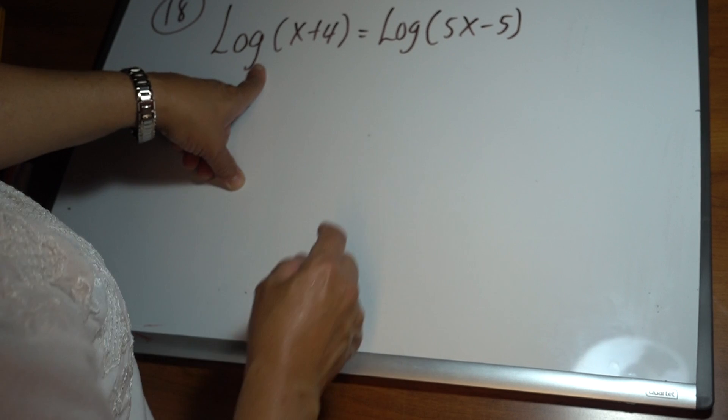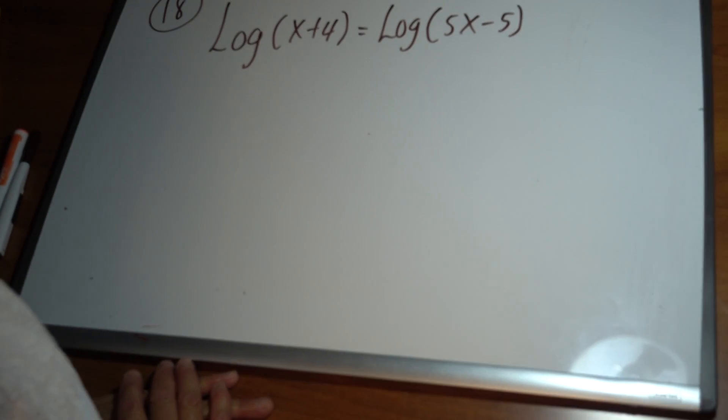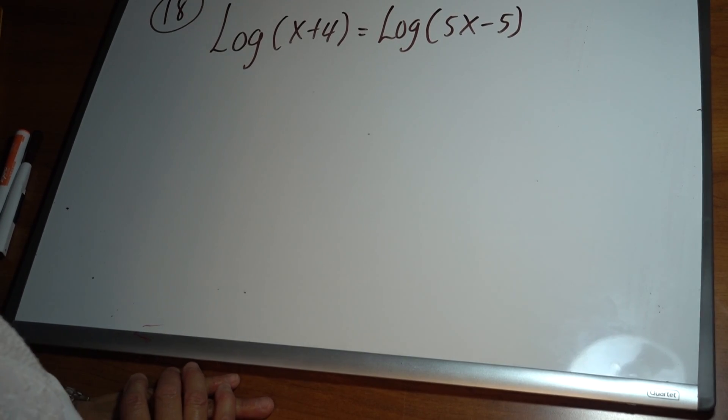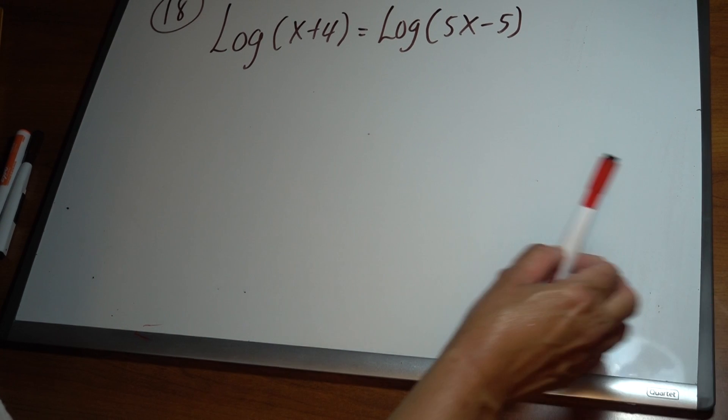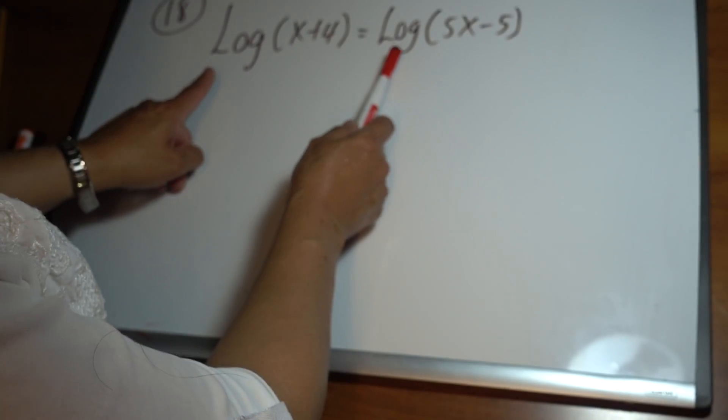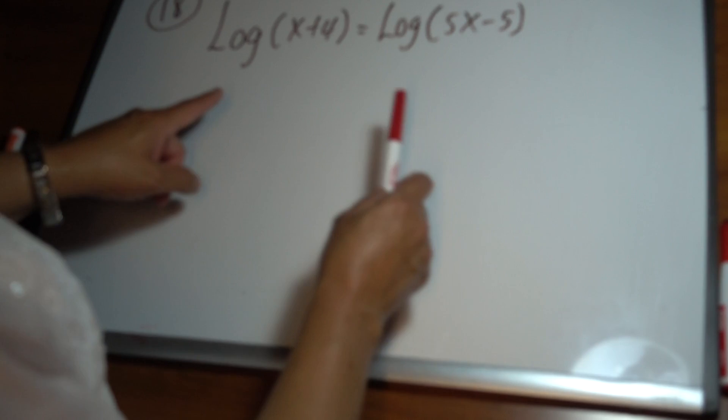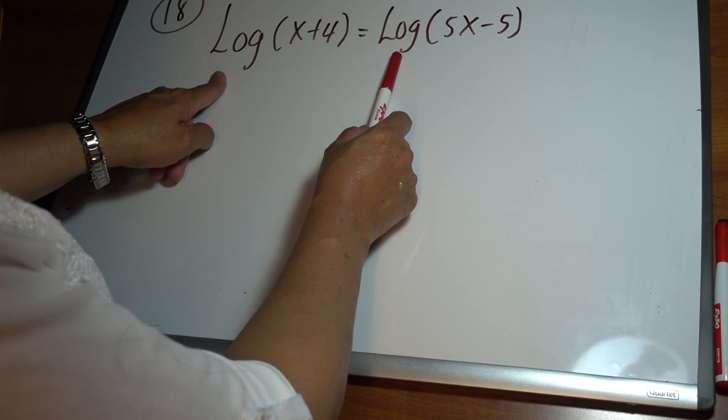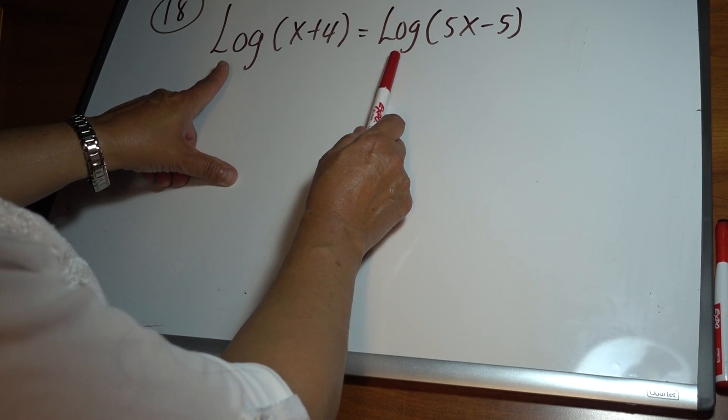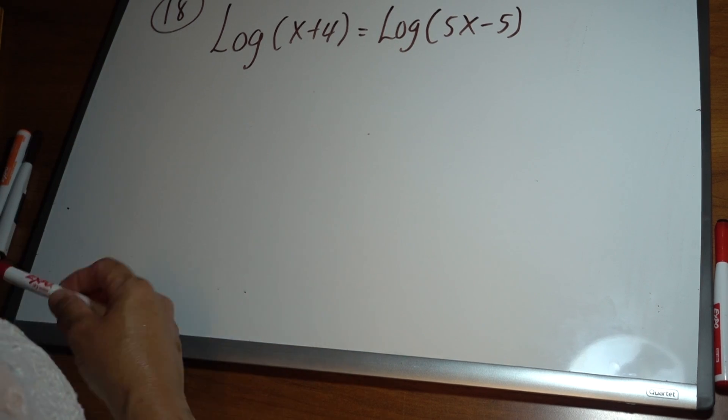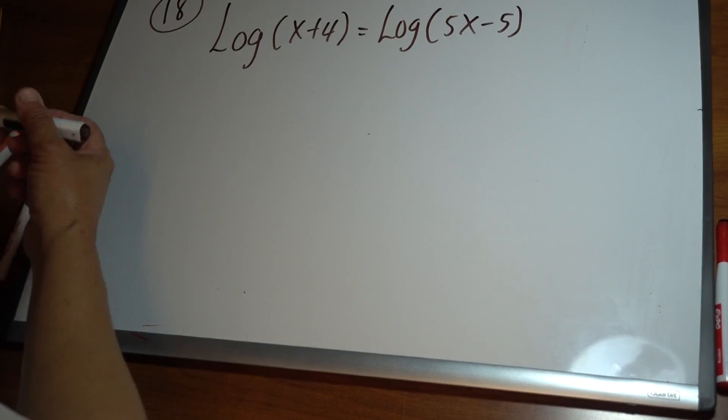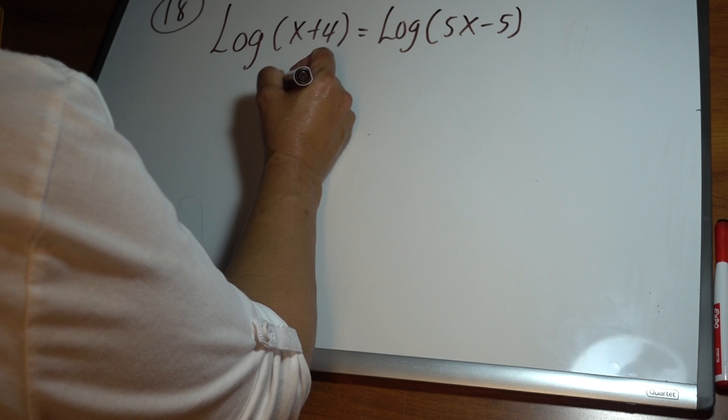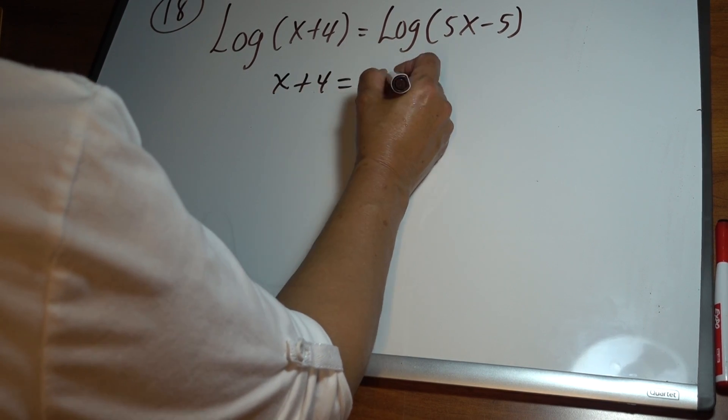We know the log is a one-to-one function, so we can simply ignore the log and rewrite x plus 4. Since it has the same base in both parts and only a single log in both parts, we can say x plus 4 equals 5x minus 5.